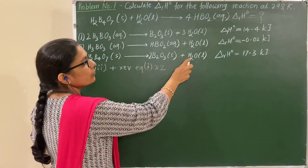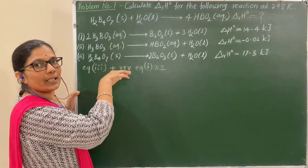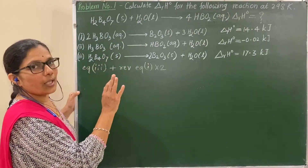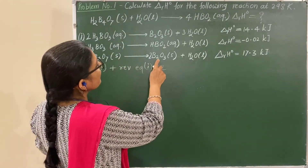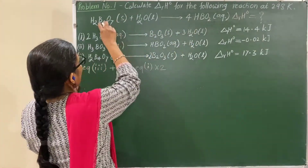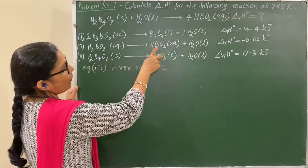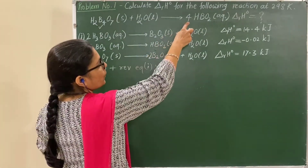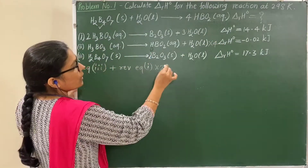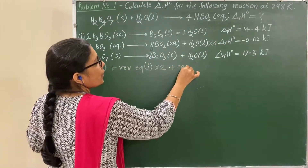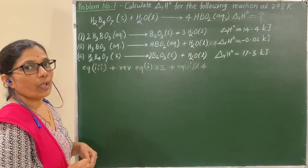Now, 4HBO2 is required in the target equation — it is available in equation 2. Since we need 4HBO2 and the equation gives one HBO2, multiply equation 2 by 4. That is equation number 2 multiplied by 4.